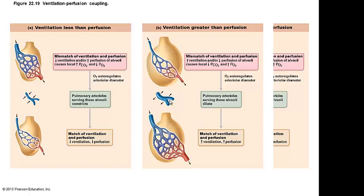When we talk about some of the mismatches, it has to do with not being able to set up those pressure gradients. When you look at these two diagrams — ventilation less than perfusion, versus ventilation greater than perfusion. Decreased ventilation and/or increased perfusion of alveoli causes local changes. If I create an imbalance in pressure gradient, an increase in the partial pressure of carbon dioxide and oxygen, I'm going to mess up what I saw in the diagram before — figure 22.17.